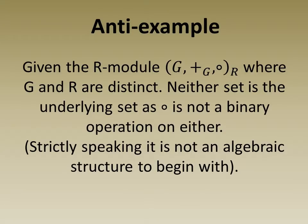As an anti-example, consider the R-module specified algebraically here, where G and R are distinct. Neither set is the underlying set, as scalar multiplication, denoted by a small circle, is not a binary operation on either.